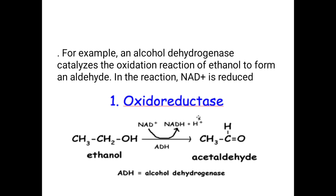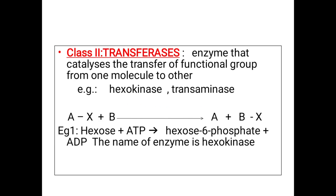The second group, Class 2, is transferases. How many classes total? Six classes. Transferases are enzymes that catalyze the transfer of a functional group from one molecule to another. Examples include hexokinase, glucokinase, and transaminases. These enzymes we will also see in metabolism — for example, hexokinase is involved in tissue conversion of glycogen to glucose.